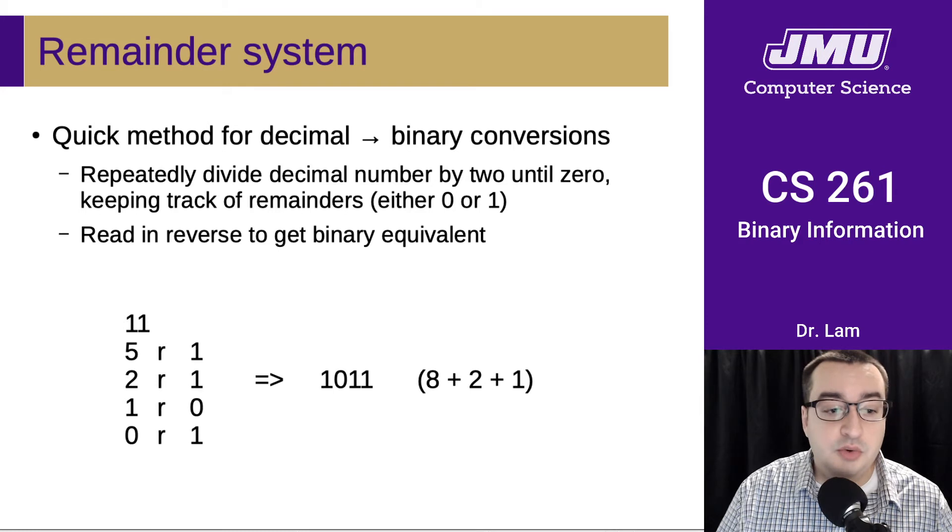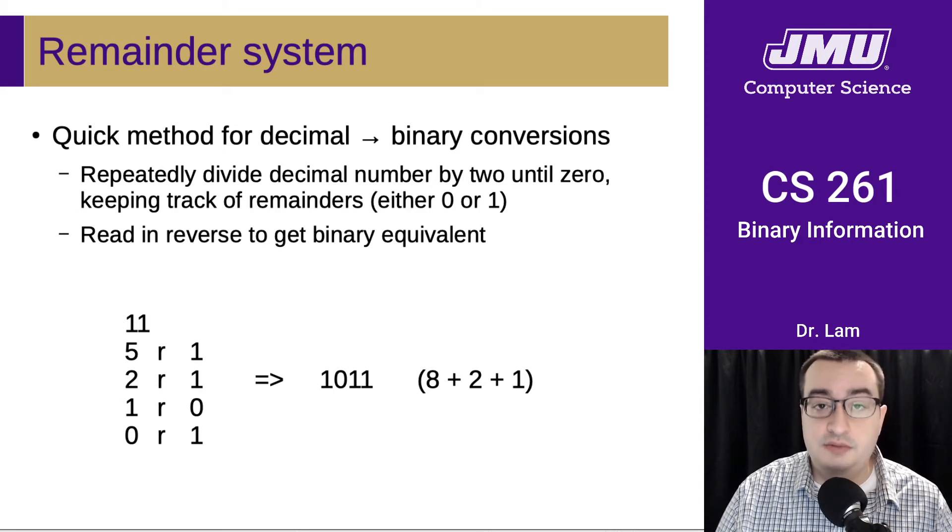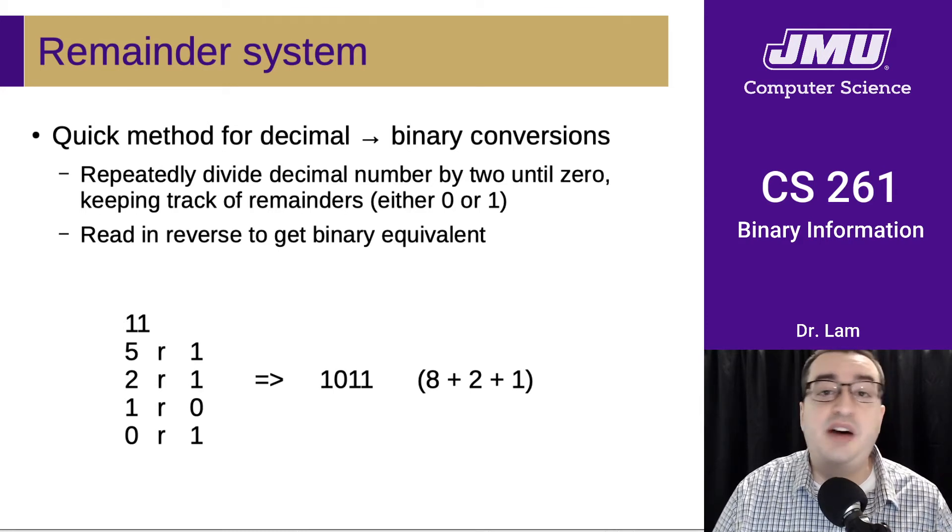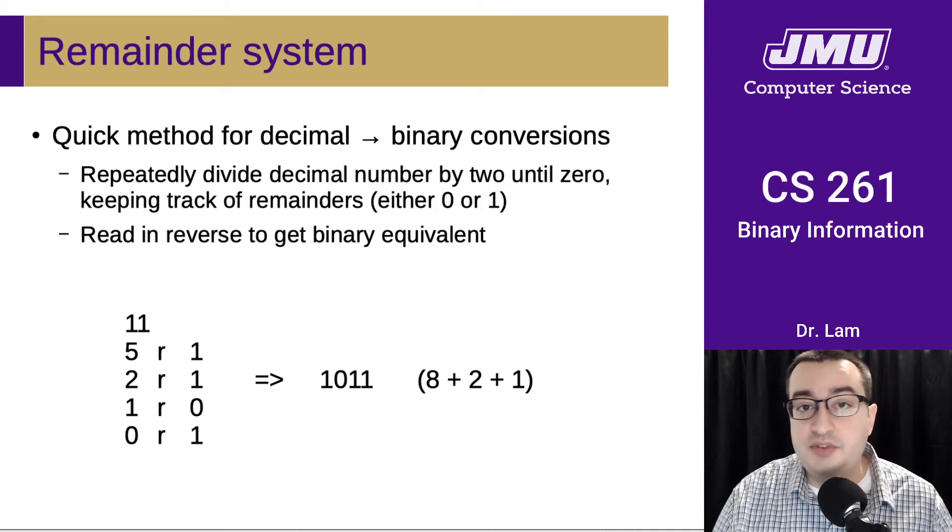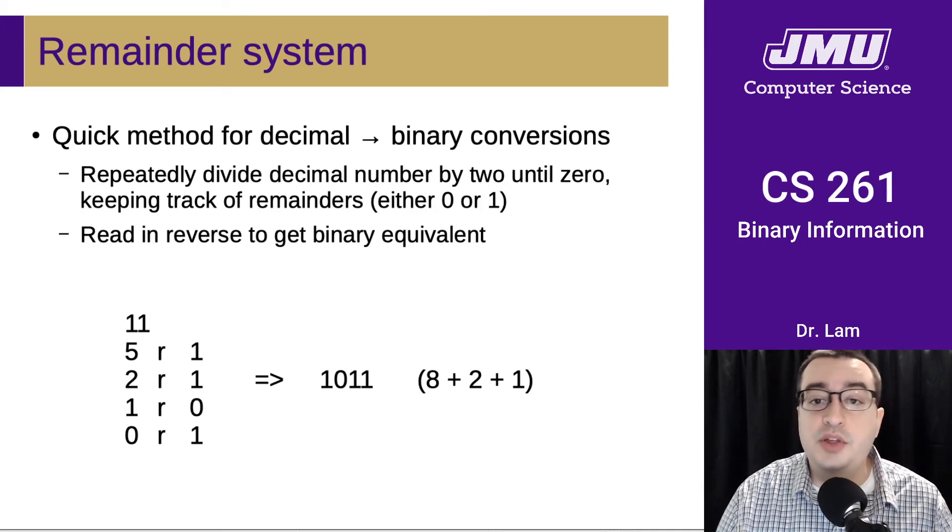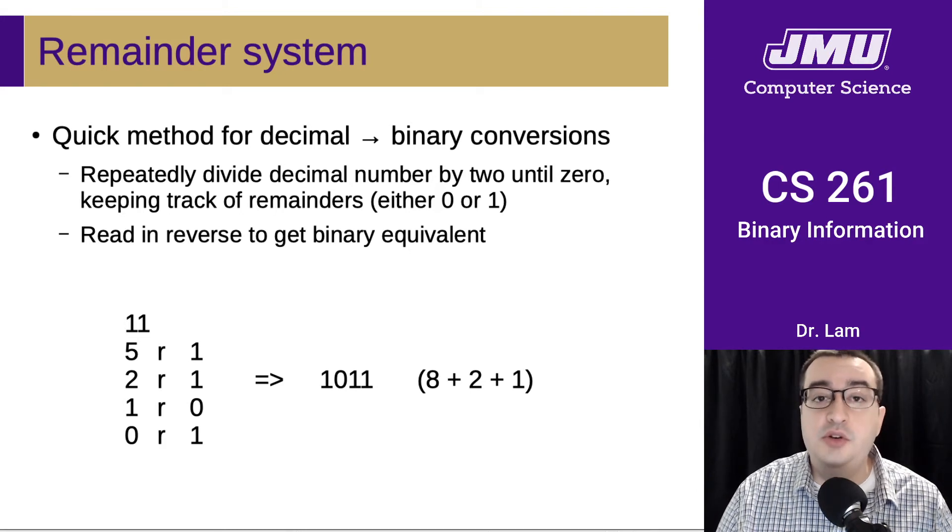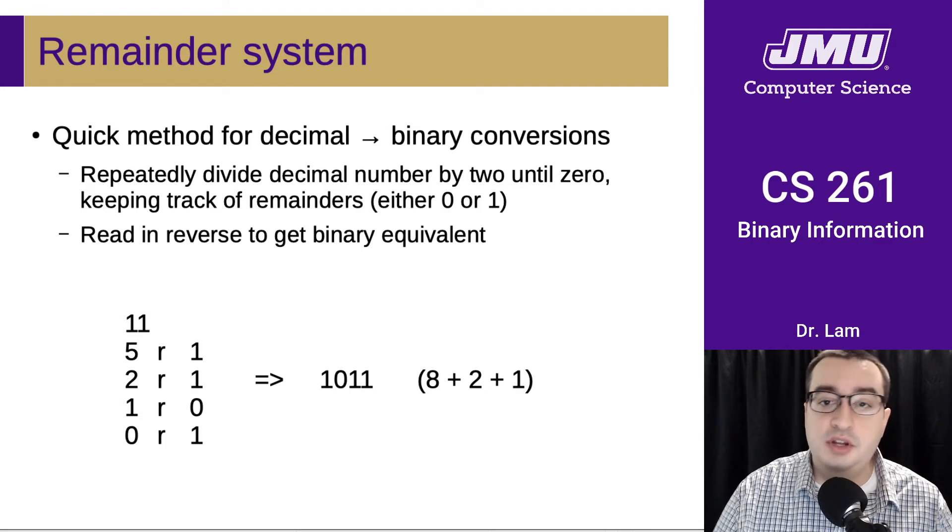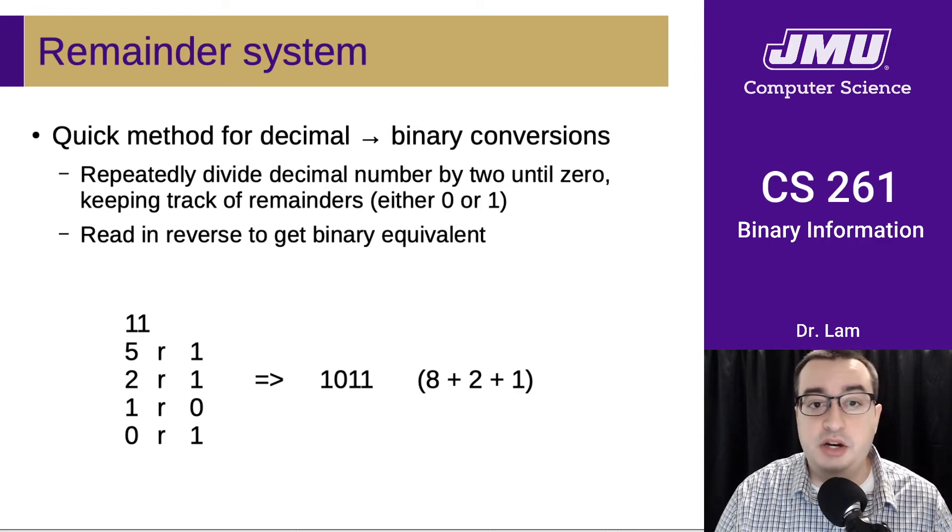Generally, it deals with remainders. You take the number you're converting to binary and repeatedly divide by 2. Every time you divide by 2 using integer arithmetic, you'll have either 0 or 1 as the remainder. Keep track of those remainders. Once you have all the remainders, read them off in reverse order to get your binary encoding.